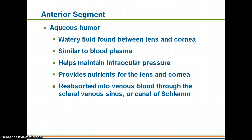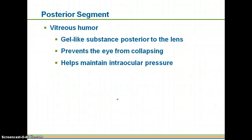If that canal gets blocked, it can lead to a lot of pressure and pain inside your eye. You may have heard of glaucoma — that's basically when you cannot drain the aqueous humor from the anterior segment. The vitreous humor is gel-like, keeps your eye from collapsing, and helps maintain intraocular pressure. Unlike aqueous humor, vitreous humor is not continuously replaced — what you're born with is essentially what you have for life.